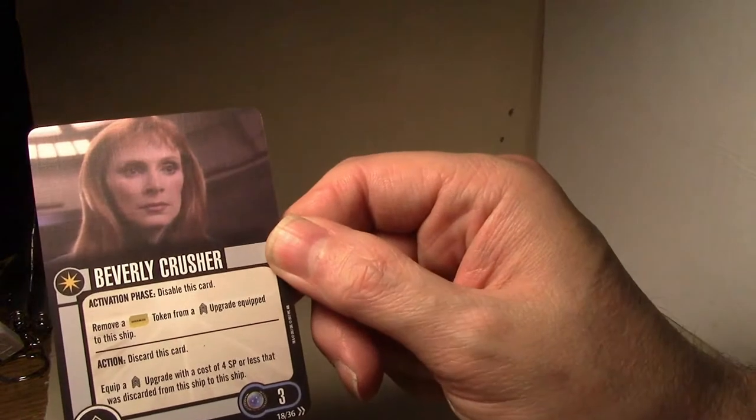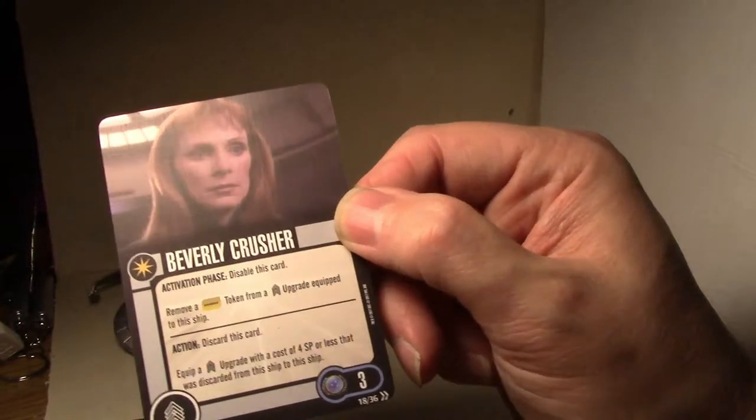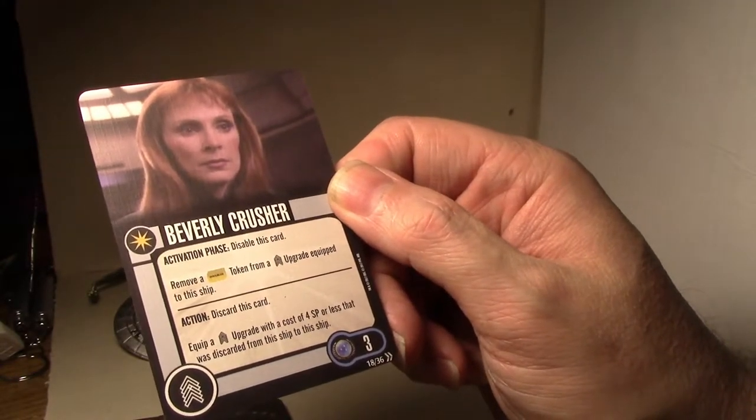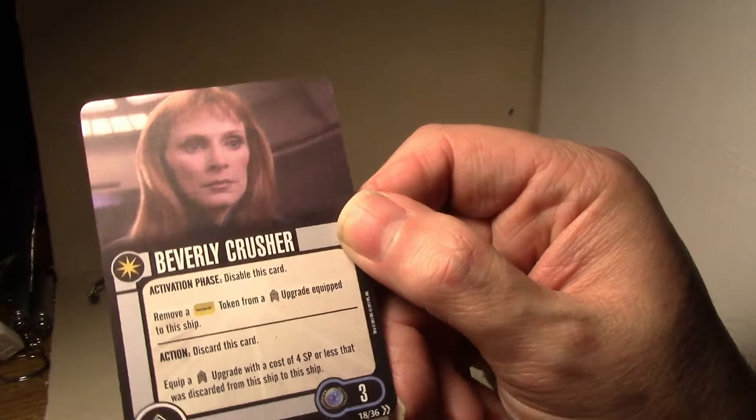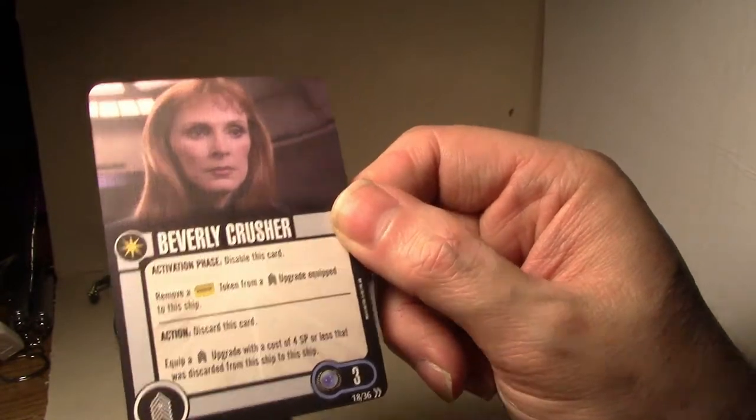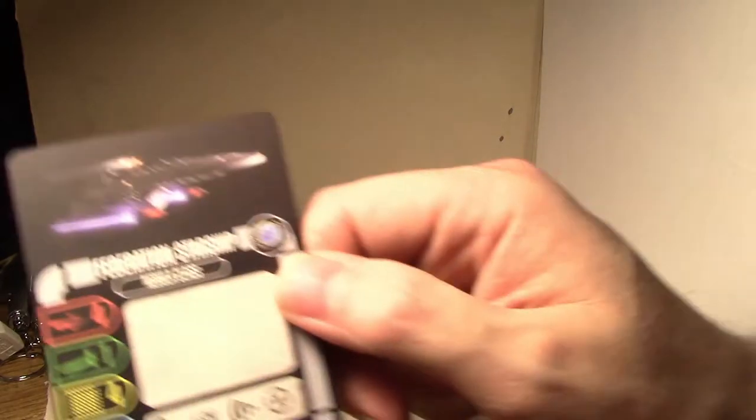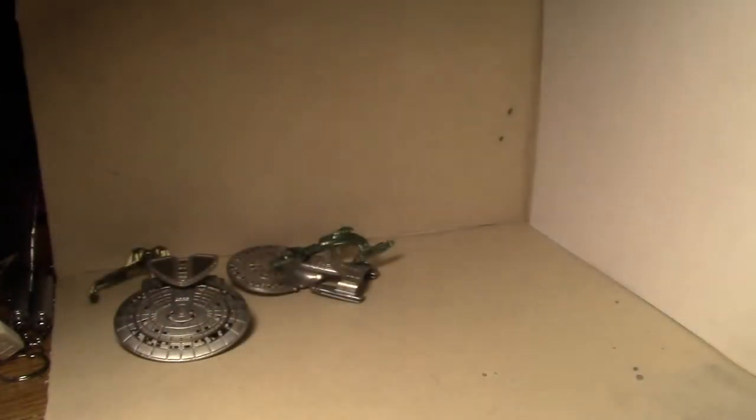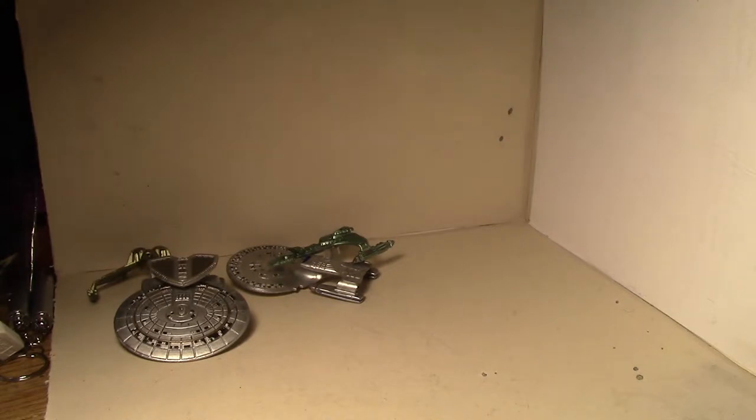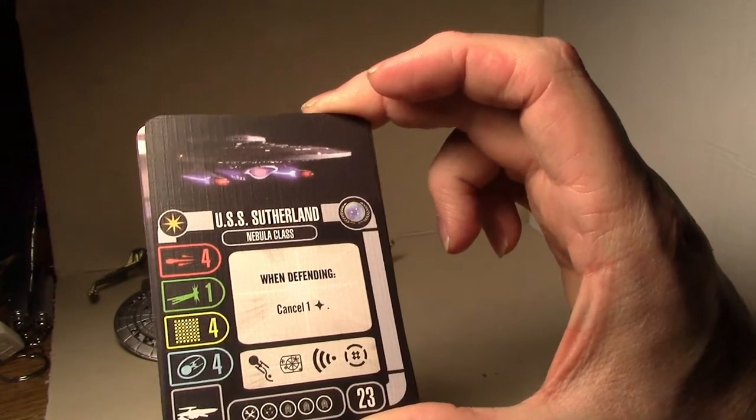One more Federation card. Beverly Crusher. Disable this card. Remove a disable token from a crew upgrade. So, it basically transfers a disable token from another one to her. Or action. Discard this card. Equip a crew upgrade with a cost of 4 SP or less. That was discarded from this ship to this ship. She can literally bring back somebody from the dead. For a cost of 4 points or less. Would be a good one to use on that. And here is the Generic Nebula class for just 19 points. Again, that Sutherland's ability is just so strong. This is probably the Ace Federation card of this pack. There are a lot of them that are really, really good. But this one is amazing.